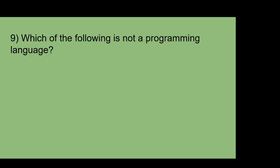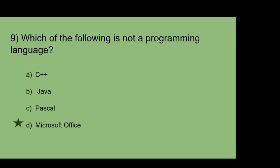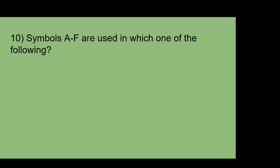Which of the following is not a programming language? A: C++. B: Java. C: Pascal. D: Microsoft Office. The answer is Microsoft Office.